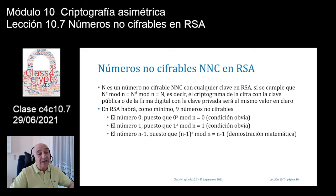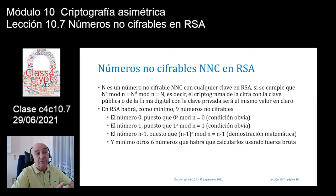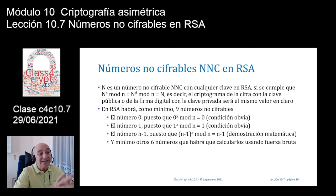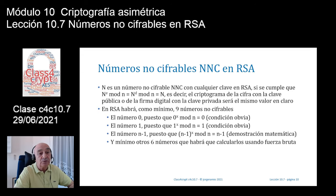Lo que sucede es que en el mejor de los casos habrá como mínimo otros seis números que van a ir en claro. La cantidad mínima de números no cifrables será igual a 9. Esos seis números que faltan, como mínimo, pueden ser muchos más, y habrá que calcularlos mediante el uso de fuerza bruta en los primos P y Q, como veremos a continuación.